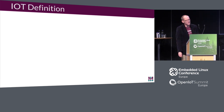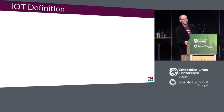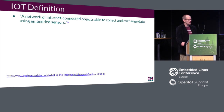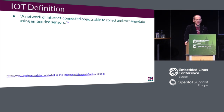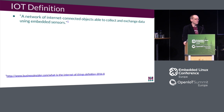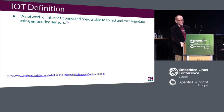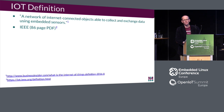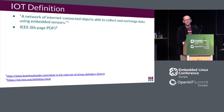Let's start with the definition of IoT. Business Insider claims it's a network of interconnected objects able to collect and exchange data using embedded sensors. Then I found one on the IEEE which was 86 pages — I read about the first paragraph and a half and stopped. The link is at the bottom; feel free to download that if you're having trouble sleeping.